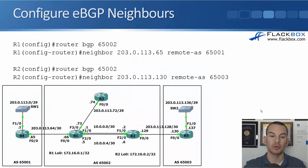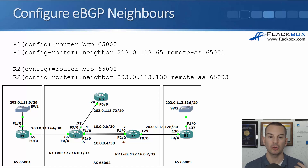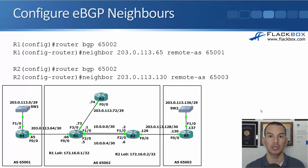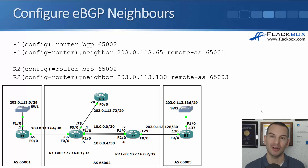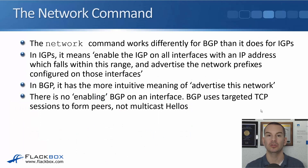We've got all of our BGP neighbors configured but we're not actually advertising any networks. If we do a show IP BGP summary we'll see BGP is working and everything is up, but we're not sending any IP addresses anywhere. For that we need to use the network command.